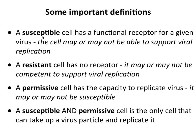These terms refer to cells and their ability to be infected by viruses. A susceptible cell has a functional receptor for a virus — that's all susceptible means. Nothing is implied about what happens beyond the receptor, so the cell may or may not be able to support viral replication. The virus has to bind to a receptor on the cell surface and then get in and replicate inside the cell. Susceptibility only refers to whether or not there's a receptor on the cell surface, and if a cell is resistant, that's because it has no receptor.